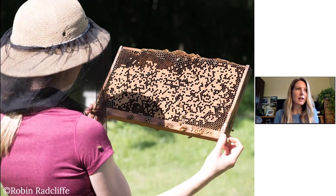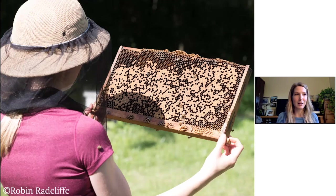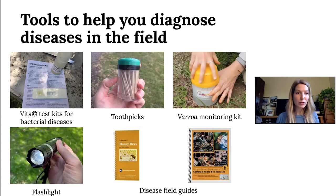It can be tricky to feel confident in recognizing a bee disease when you see it in your own hives. A lot of beekeepers don't have experience seeing diseases in their colonies. If you're a beekeeper with just a few hives in your backyard and they've been fairly healthy over time, you might not see things like American foulbrood or European foulbrood popping up. So when they do pop up, you might feel uncertain about what you're looking at.